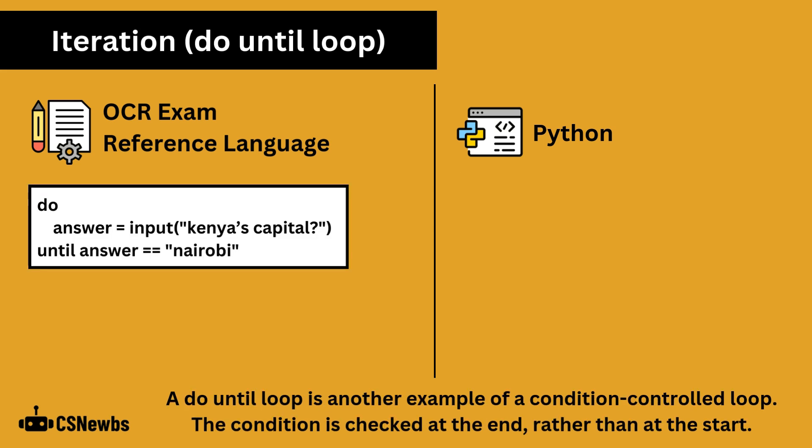A do-until loop is another example of a condition-controlled loop. The condition is checked at the end rather than at the start. Do-until loops are not used in Python. A major difference between a while loop and a do-until loop is that because the condition is at the end, a do-until loop will run the indented code at least once, whereas with a while loop, if the condition is already false, the loop will not run at all.